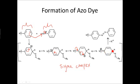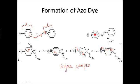From this intermediate, what is key is what forms the final structure. The hydrogen on the carbon — the carbon-hydrogen bond — breaks, causing expulsion of a proton. This causes the electrons to return to reform the pi bonds, restoring the benzene ring's aromaticity, and yielding the final azo dye product.